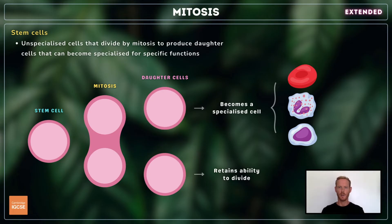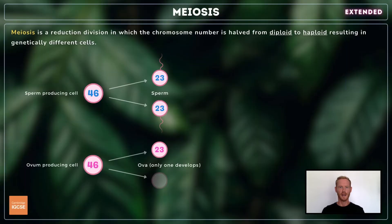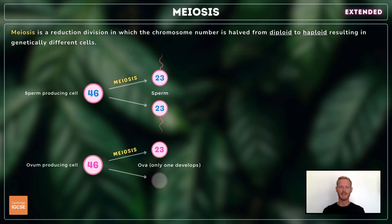That's everything you need to know about mitosis, so we'll move on now to look at another type of cell division called meiosis. Meiosis is a reduction division in which the chromosome number is halved from diploid to haploid, resulting in genetically different cells.